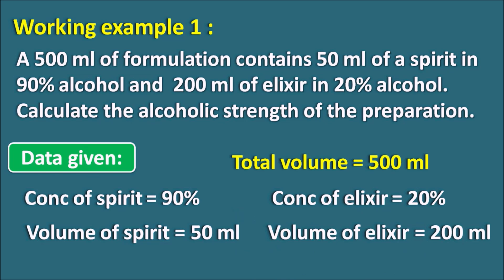The volume of the spirit is 50 ml and the volume of the elixir is 200 ml, so the total volume of these two solutions is 250 ml. But the final volume is 500 ml, which means this 250 ml combination is converted to 500 ml by the addition of water as the solvent. So this formulation contains 50 ml of spirit, 200 ml of elixir, and 250 ml of water, giving a total volume of 500 ml. We need to calculate the alcoholic strength of this preparation.